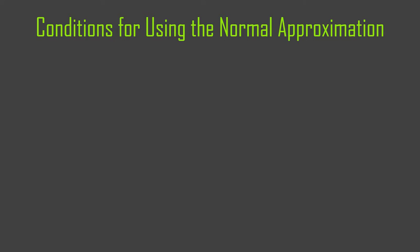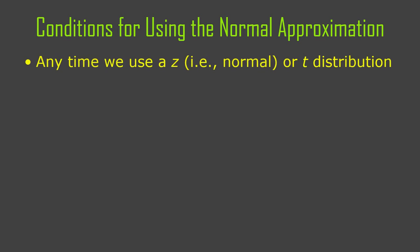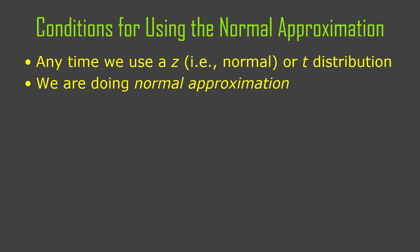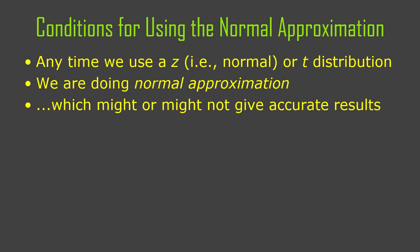So there are conditions. Let me explain why. Because we use the normal approximation, and as we've discovered on previous homework, any time we use the normal approximation — when we assume that some data are close enough to normal that we can use the normal distribution or t-distribution to figure out areas like p-values — we're doing normal approximation, which might or might not give accurate results. Some distributions are more normal than others.